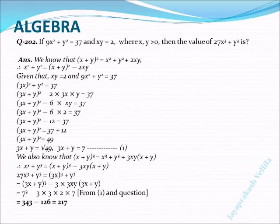Dear friends, today we have got an algebraic question. If 9x² + y² = 37 and xy = 2, where x, y > 0, then the value of 27x³ + y³ is? Here, given two expressions, we have to find out the value of 27x³ + y³.